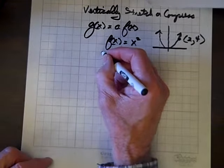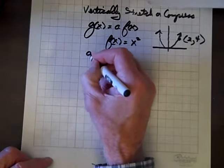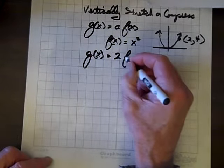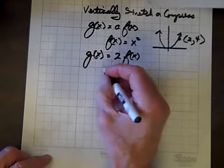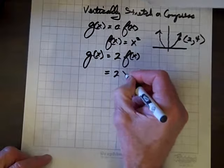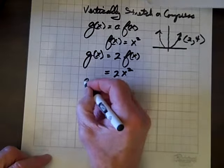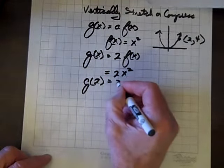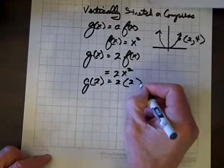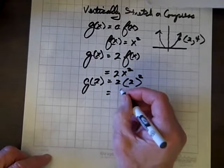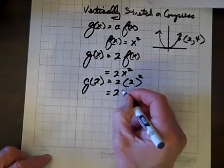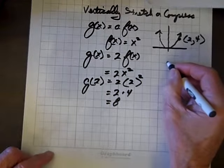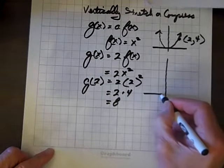So let's let a equal 2, for example. So 2 times f of x, g of x equals 2 times f of x. That is g equals 2 times x squared. And g of, we'll put 2 in for x, so we'll put 2 in for x and square that. And we have 2 times and 2 squared is 4 and that equals 8.